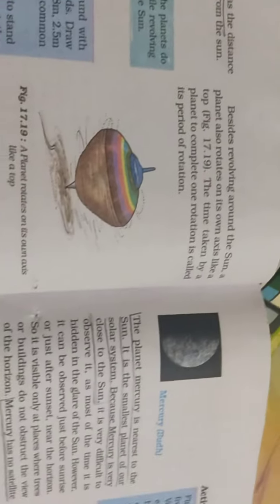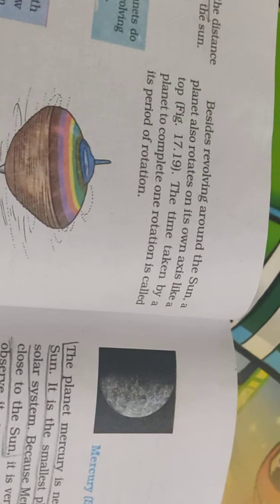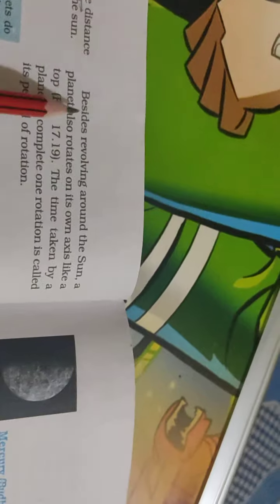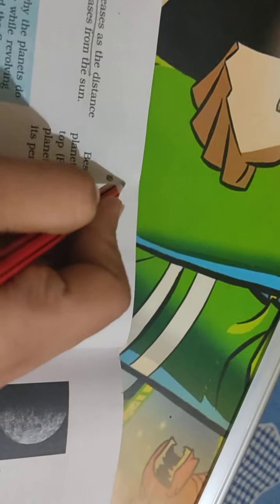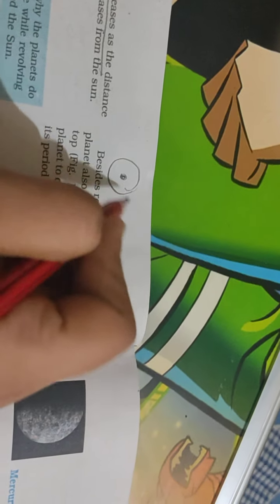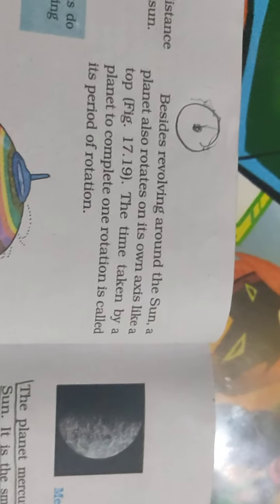The planets also rotate on their own axis. The time taken by a planet to complete one rotation is called the period of rotation.